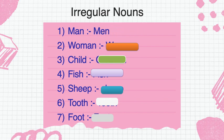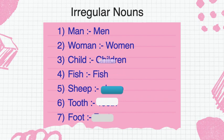Woman का plural होगा women — एक ही जगह पर E. Child का plural — children. Fish का plural — most of the students यहीं mistake कर देते हैं. Fish का सिर्फ fish रहेगा. एक हो या ज्यादा हो — fish is fish. Singular भी fish, plural भी fish.